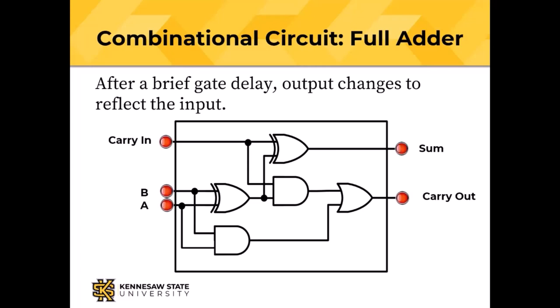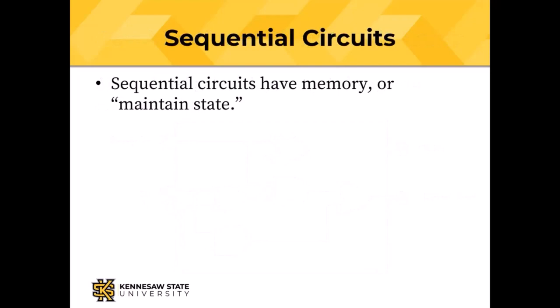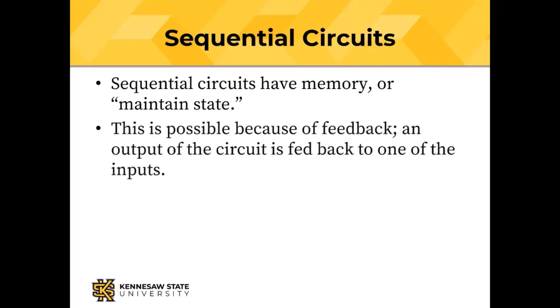That's a combinational circuit — outputs determined solely by the inputs. Now, sequential circuit. There are two different flavors of digital logic circuits: combinational and sequential. Sequential circuits have memory, or as we might say, sequential circuits maintain state. Sequential circuits maintain state because of feedback — the output of a circuit is fed back to one of the inputs.